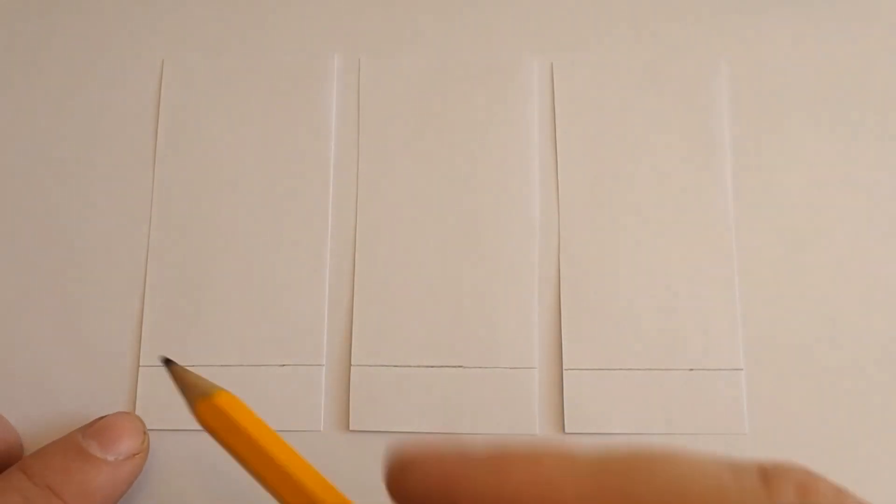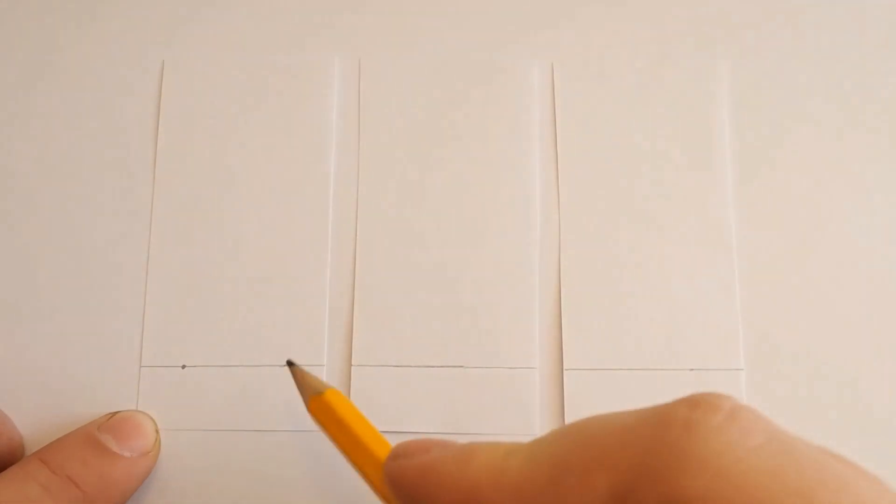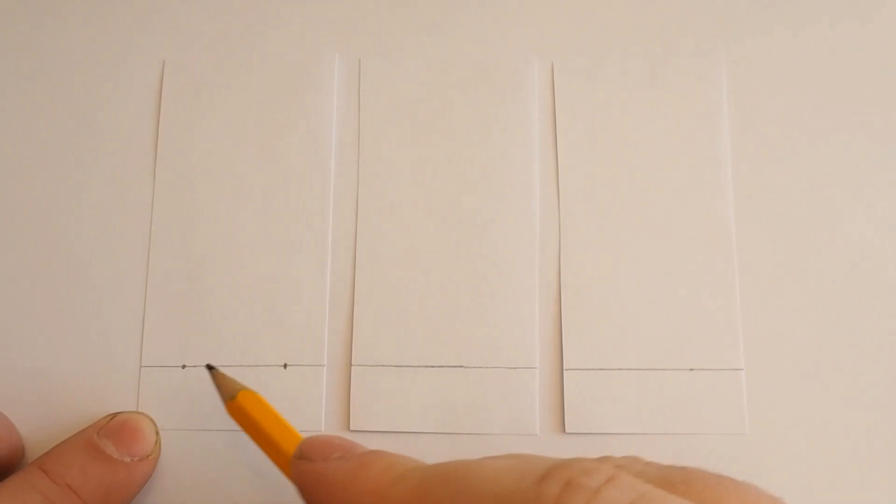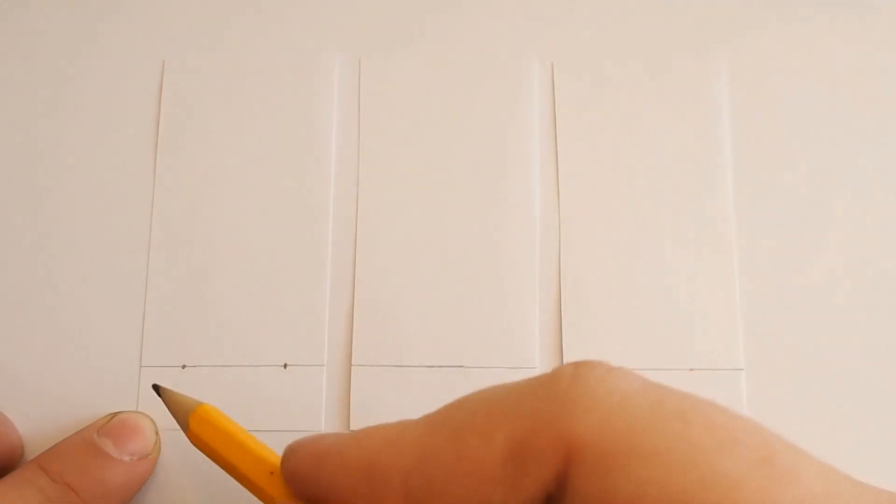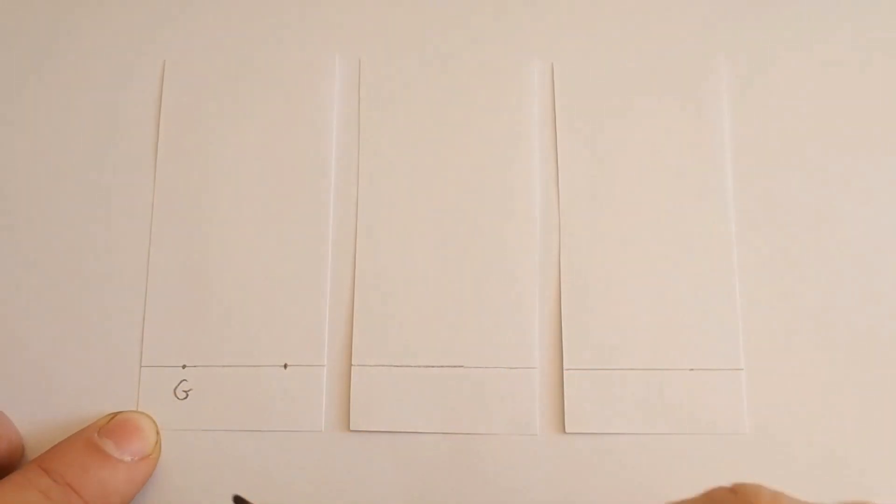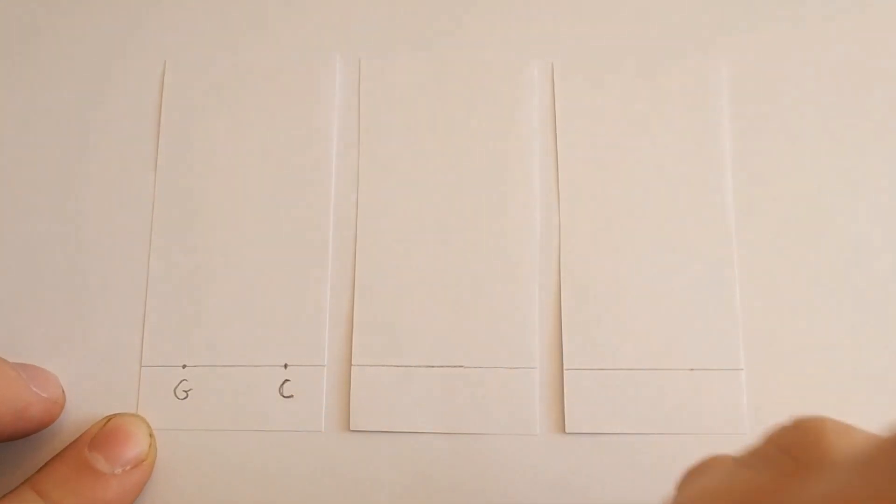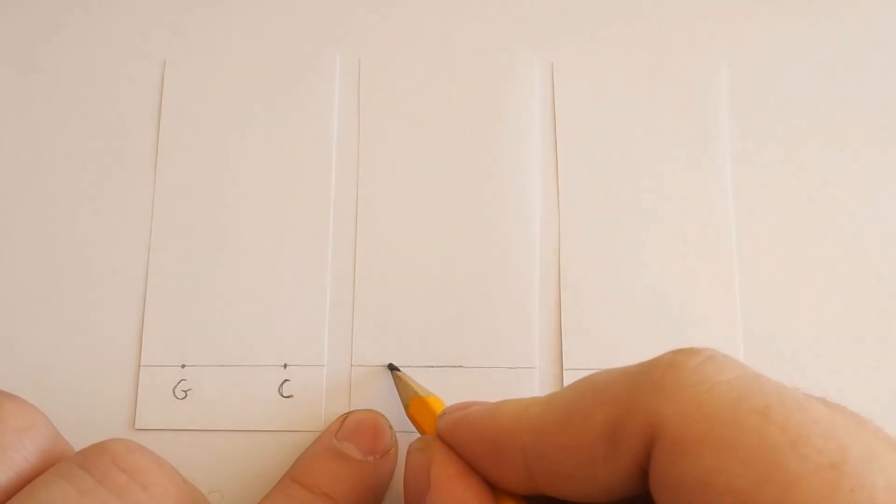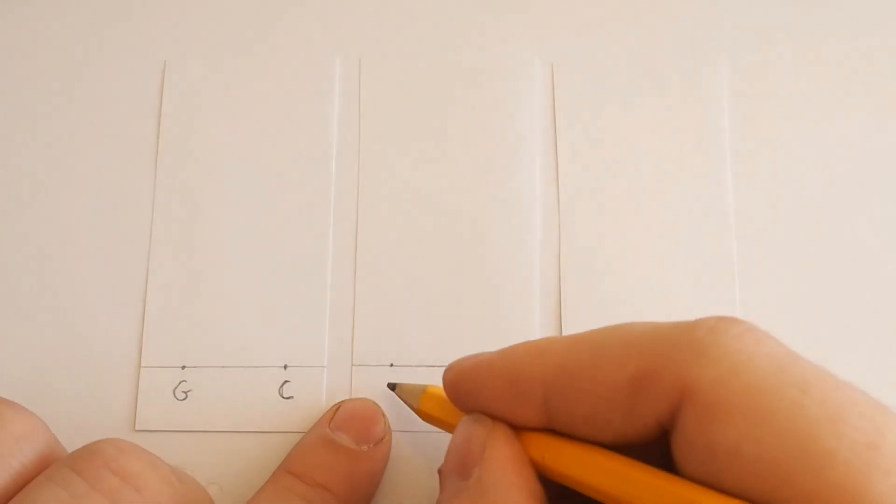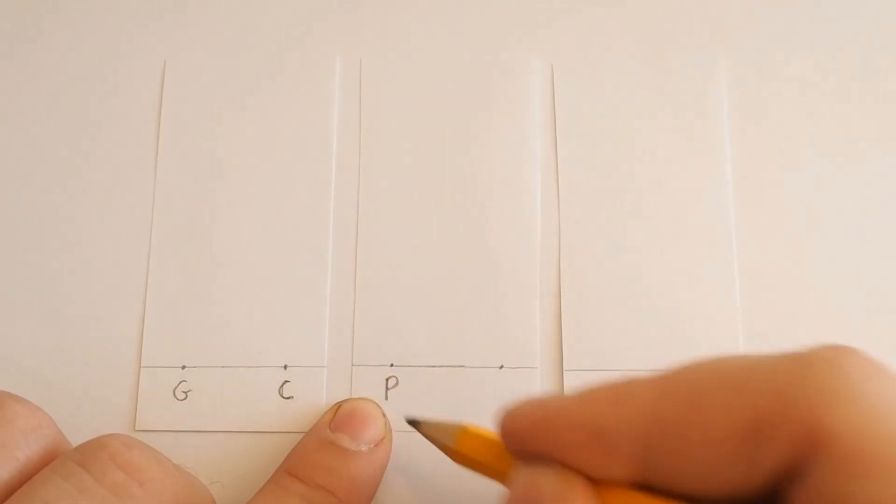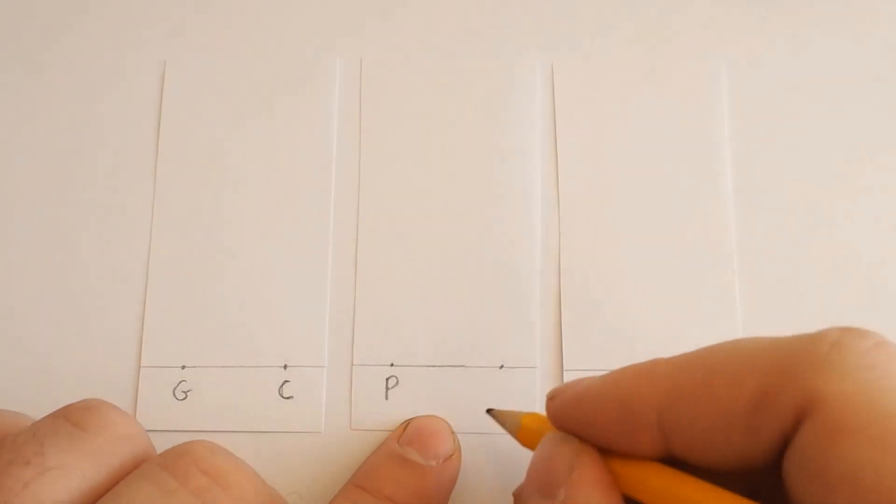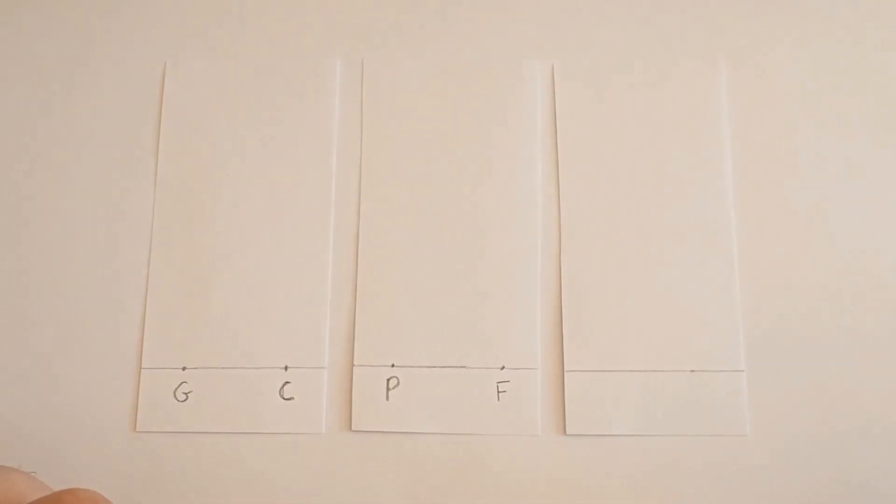We'll see them separate into different molecules and we'll be able to tell what different constituent parts we have in the solution. But first I need to label up. So I'm going to put a little dot here and a little dot here just so I know I'm putting two samples on this one and I'm going to put a G for my grass sample and a C for my camellia sample. And on this one I'm going to put a P for my pulmonaria sample and an F for the forsythia sample.